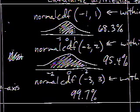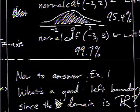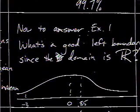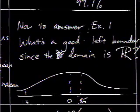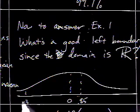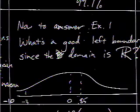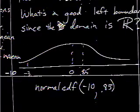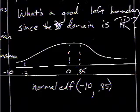Since most of the area is between negative 3 and positive 3, that means I'm going to choose something in example 1. I'm going to go back to the example 1 question and answer that now. Now to answer example 1, what's a good left boundary since the domain is all real numbers? I mean, we want everything that's less than 0.85. So I'm going to choose a left boundary which is past negative 3. I always pick negative 10. But it doesn't matter. You could pick negative 25, negative 17, negative 100. I don't really care as long as it's past negative 3. Because most of the area is contained between negative 3 and positive 3.